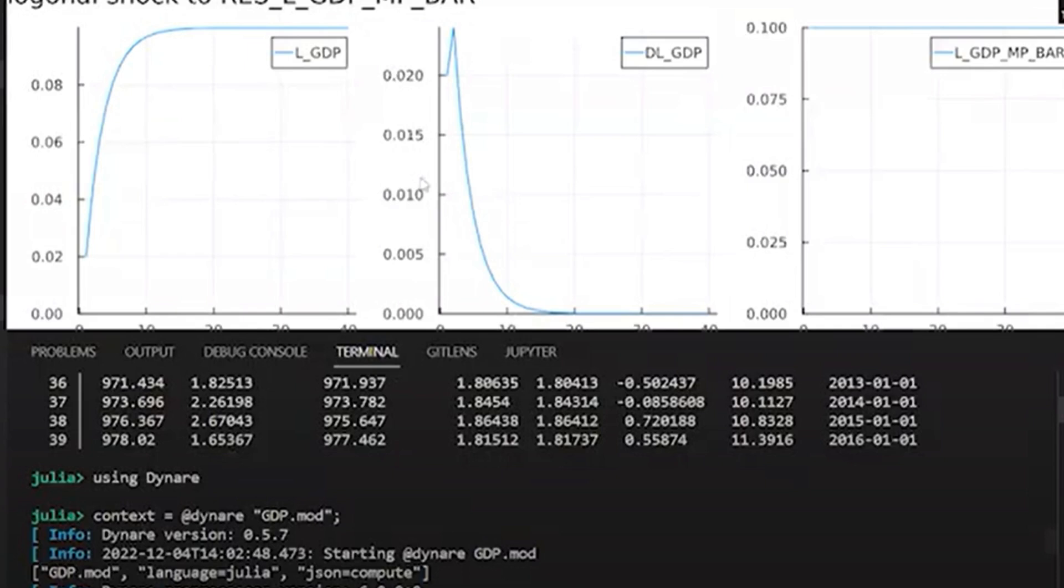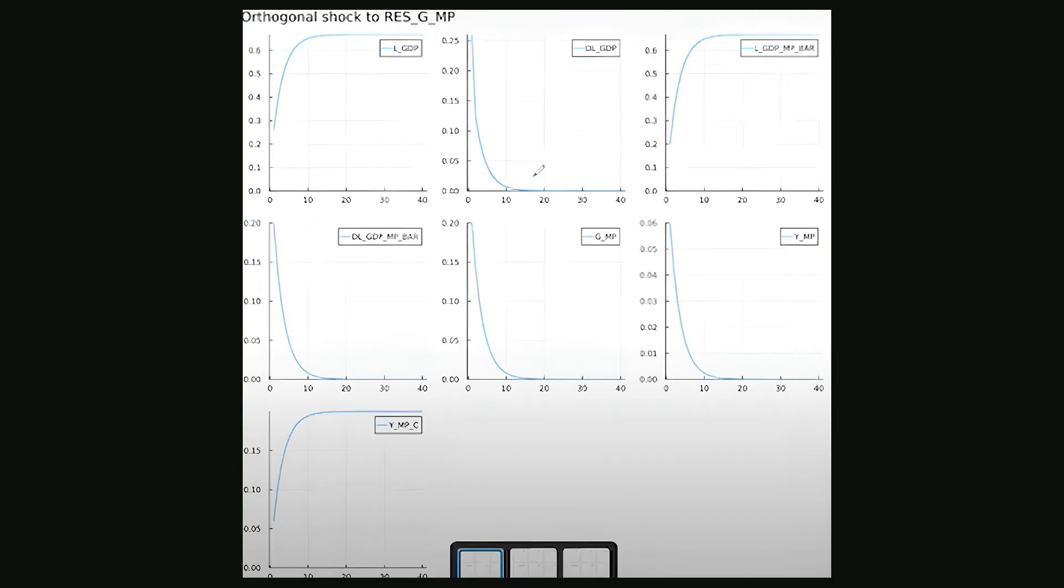Running the mod file generates impulse response functions, IRFs for the three shocks. The first shock, a positive shock to trend growth G_MP, increases trend growth and output growth. The resulting positive output gap reflects heightened expectations and increased consumption.